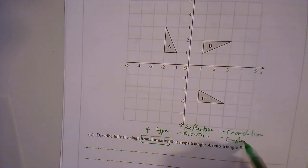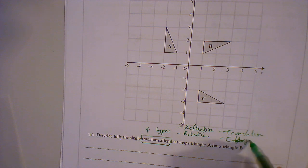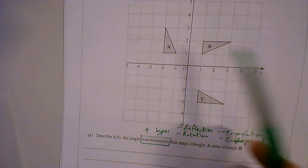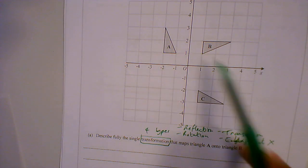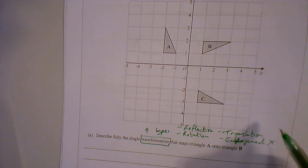Now enlargement is when something becomes smaller or bigger, and in this case nothing is becoming smaller or bigger. If I look at A and B, translation is when it stays the same, the orientation stays the same, so it's not translation.